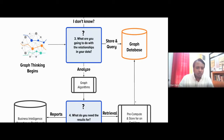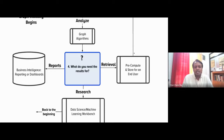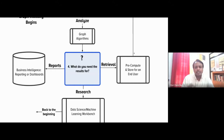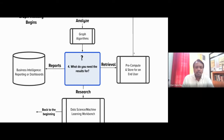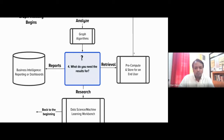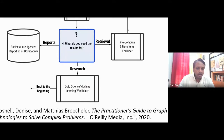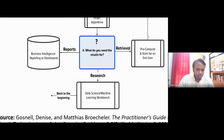Any social network platform's research team might track the average number of connections between any two people — that is an example of analyzing graph data. So either you analyze it or you query it to get the required insights. The fourth question is: what do you need the results for? Topics in graph data analysis can range from understanding specific distributions across relationships to executing algorithms across the entire structure — such as connected components, clique detection, triangle counting, graph degree distribution, PageRank, or collaborative filtering.